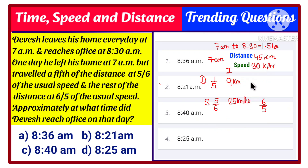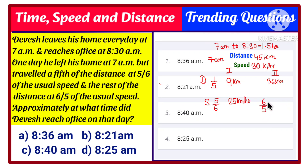The remaining distance in the second case is 45 − 9 = 36 km. He travels this 36 km at a speed of 6/5 of the original speed: 30 × (6/5) = 36 km/h. So in the second case, he traveled 36 km at 36 km/h.